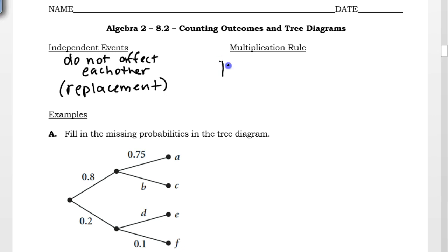So for independent events, the probability of getting two things to happen, A and B, is the probability of the first thing times the probability of the second thing.